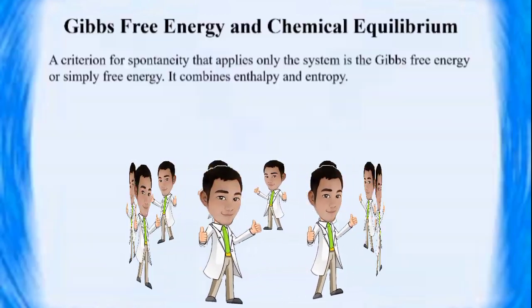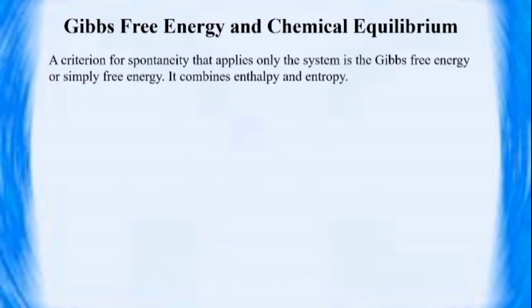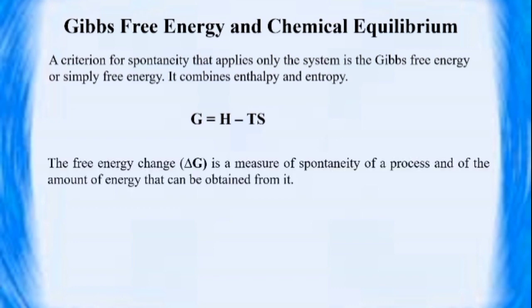A criterion for spontaneity that applies only to the system is the Gibbs free energy, or simply free energy. It combines enthalpy and entropy with the expression G is equal to H minus TS. The free energy change, or delta G, is a measure of the spontaneity of a process and of the amount of energy that can be obtained from it.